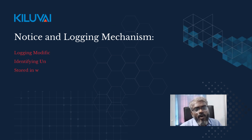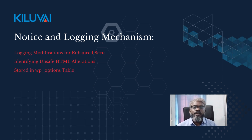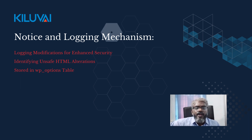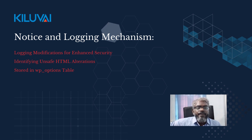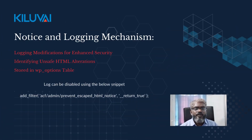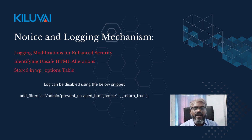Now let's explore how this logging system operates. When ACF detects a modification, it logs data about the affected function call. This log is stored as an option in the WP options table. Entries in this log trigger notices in the WordPress admin, visible to users with editor role and higher by default. Admin users can dismiss the notice after making necessary fixes, ensuring a streamlined process for addressing and verifying changes. If needed, the log can be entirely disabled using the ACF/admin/prevent_escaped_html_notice filter.